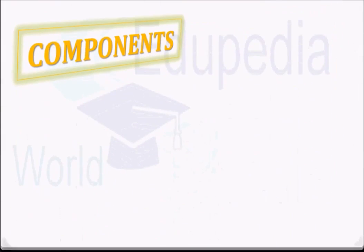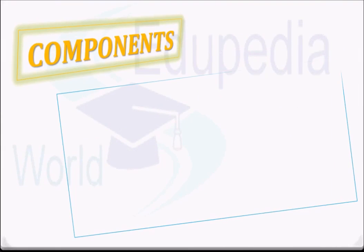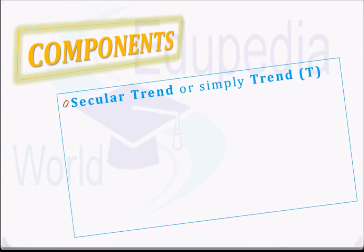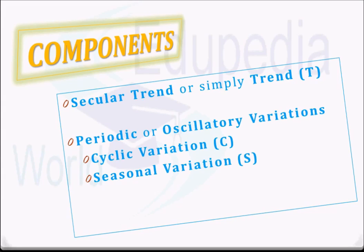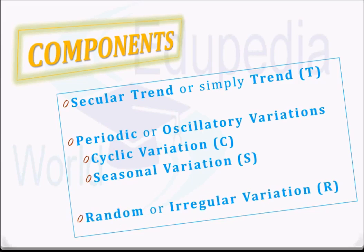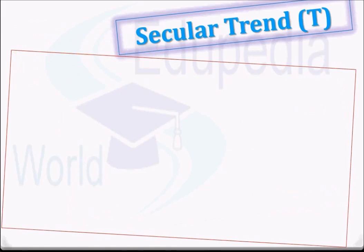There are basically four components of time series. First is the secular trend, or simply trend. Then we have periodic or oscillatory variations, which are of two types: the long-term variation called cyclic variation denoted by C, and the short-term variation called seasonal variation denoted by S. Finally, we have the random or irregular variation, denoted by R.